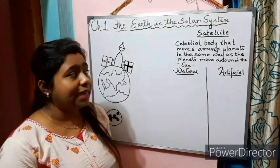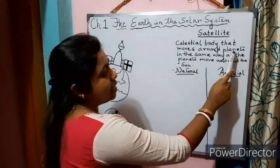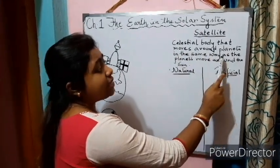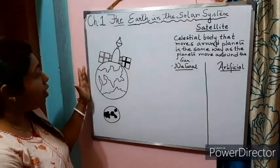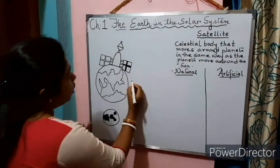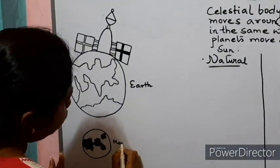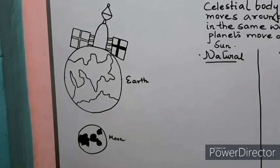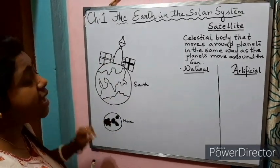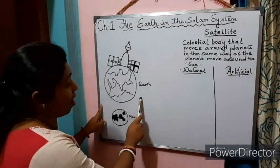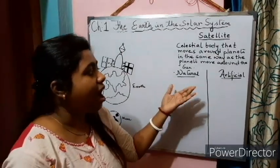What is a satellite? A satellite is a celestial body that moves around planets in the same way as the planets move around the Sun. You can see here a diagram of Earth and its natural satellite, the Moon. The Moon revolves around the Earth in the same way as the Earth revolves around the Sun.